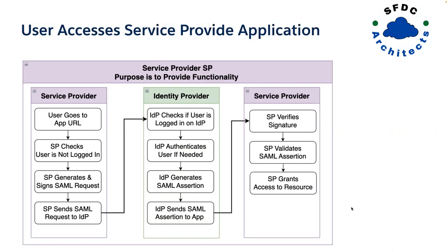One kind of certification question gives you steps and asks you to arrange them in sequence — that's tricky for the service provider flow because of when the user authenticates. The service provider stores where to go get the credential verified, and that's the IDP. The service provider is not authenticating the user — authentication is happening on the IDP system. The user gets redirected to that URL, and that's when the user gets challenged for the username and password if needed. Definitely make sure you know: authentication happens at the IDP level.